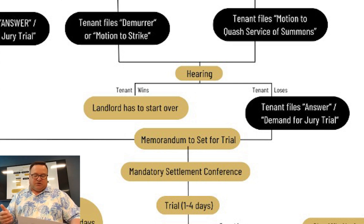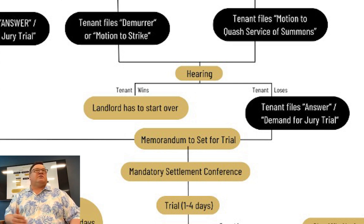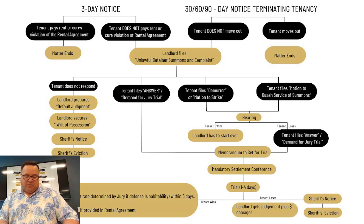Tenant files a motion to strike — you get a hearing. Tenant has a motion to quash summons or service. Those are very rare and they usually don't go very far. A motion to quash service would be something like claiming you didn't really give them the notice. For the most part, that's a moot argument because they trust the property manager as a third-party neutral, and they assume that if we said we gave it to them, we gave it. I've never had it go past that.